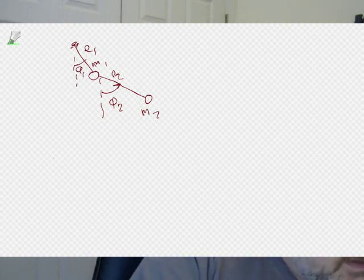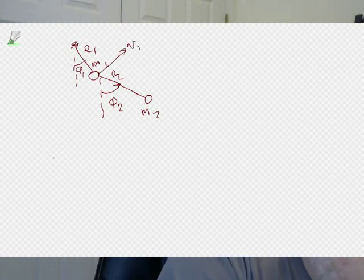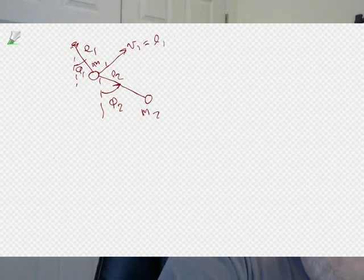To analyze this, we're going to have to do potentials and kinetic energies. For kinetic energies, we're going to need velocity. V1 is actually not very hard — the speed of this guy is just going to be L1 phi1-dot. That's all there is to that one.